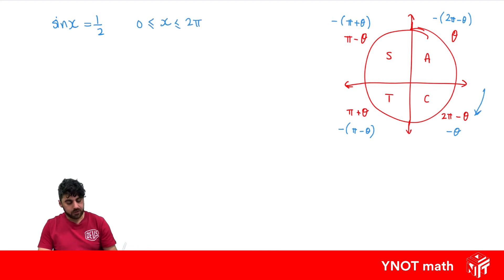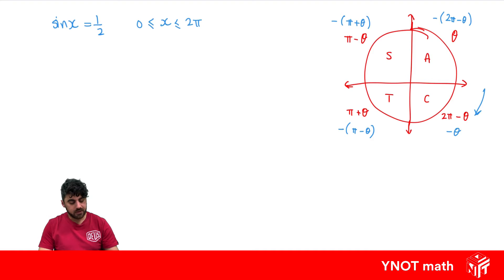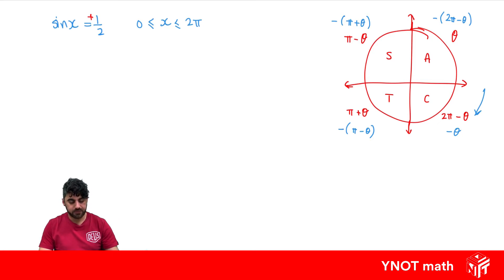The domain for x is between zero and two pi. When you're solving trigonometric equations, you need to look at the domain — if the domain is in radians, your answer needs to be in radians; if it's in degrees, your answer needs to be in degrees. Here we're looking at radians only. We want to note that this value is positive, so we know our answer for sine is going to be positive in the first and the second quadrant.